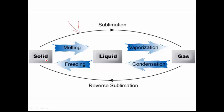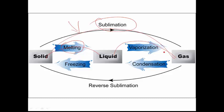The conversion of matter from solid to liquid is called melting. The conversion of matter from liquid to gas is called vaporization. The conversion of gas to liquid is called condensation. Conversion of liquid to solid is called freezing. Conversion of solid directly to gas is called sublimation. Conversion of gas to solid is called reverse sublimation.